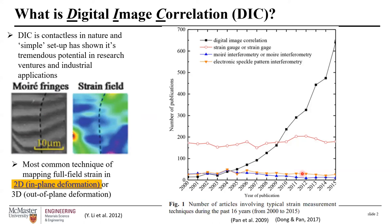Before using DIC and relying on grayscale variation, researchers were either mapping strains by mapping a grid on the material and looking at the local distortion of the grid, or using fringe patterns, in which deformation is measured by recording the phase differences of a scattered light wave before and after deformation.